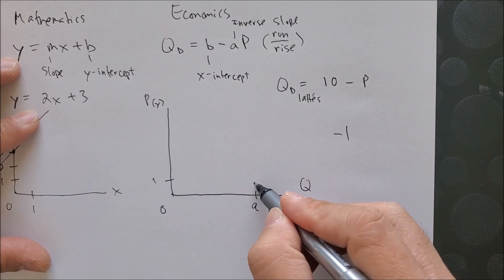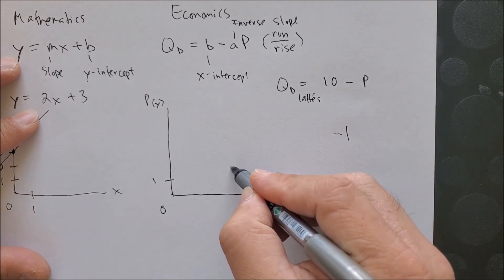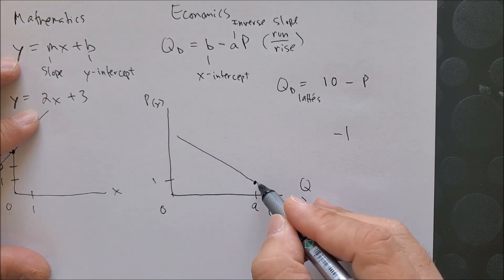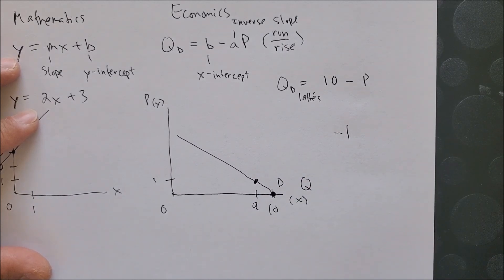And now we can label that there and connect the dots to give us a linear curve. In our case, what we call the demand curve. And that's how you would find the demand curve.